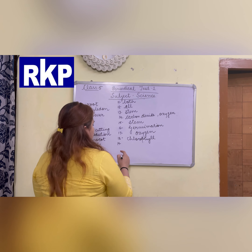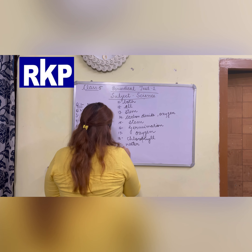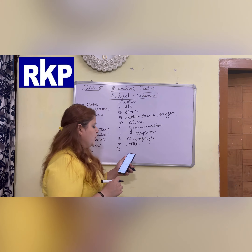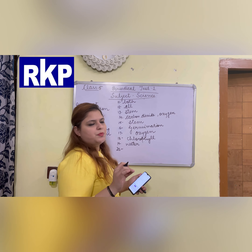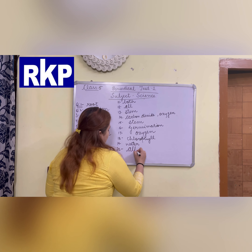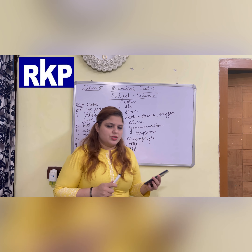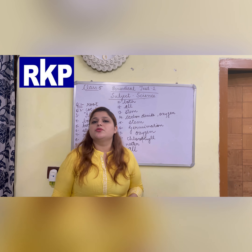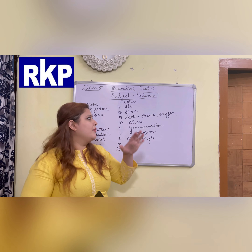Next, 19th question: seed coat absorbs what, by which it becomes soft? Seed coat absorbs water, and water makes the seed coat soft. Next, 20th question — the last one: plants can reproduce through root, stem, seeds, or all of the above? The answer is all of the above. Some plants reproduce through root, some through stem, some through seeds, and some through leaf part as well.